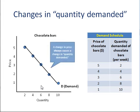So, the rule here is that when we have one existing demand curve, or supply curve, a change in price always causes a change in quantity demanded — or, if this were a supply curve, a change in quantity supplied. Movement along the curve means a change in quantity demanded or quantity supplied.